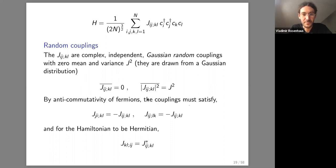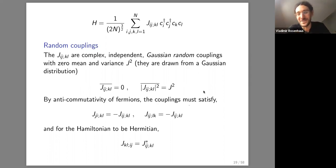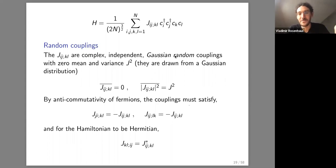A question arose about why we restrict to an even number of operators in the Hamiltonian. In the complex fermion case, number conservation requires equal numbers of creation and annihilation operators. In the Majorana case, there's no such restriction since χ = c + c†, so number conservation doesn't apply and one can in principle have an odd number. The choice depends on whether one wants a model that conserves particle number.